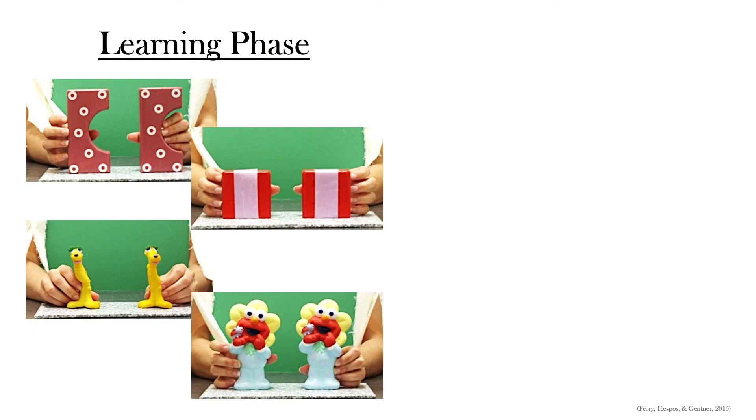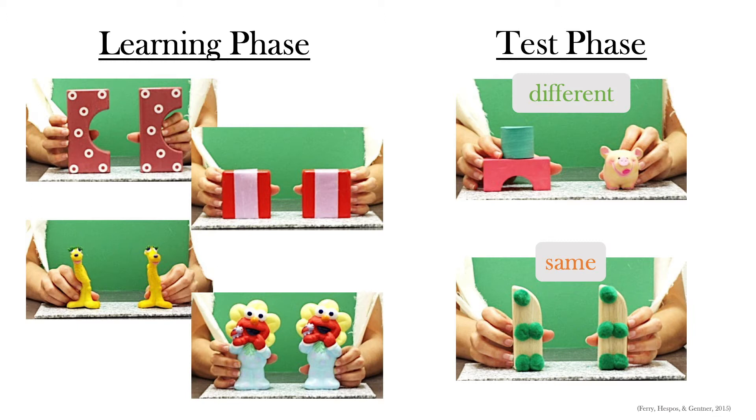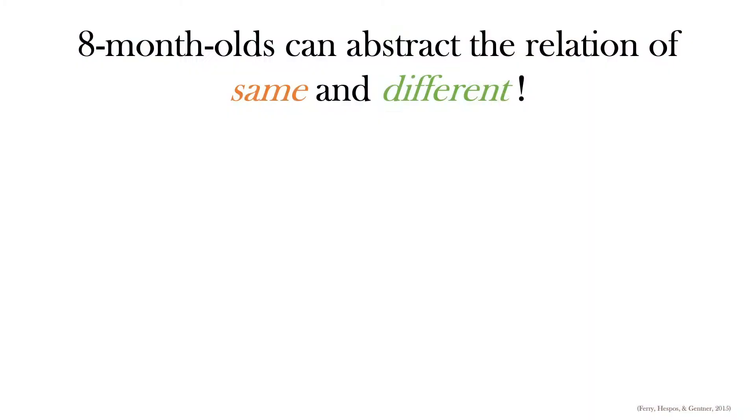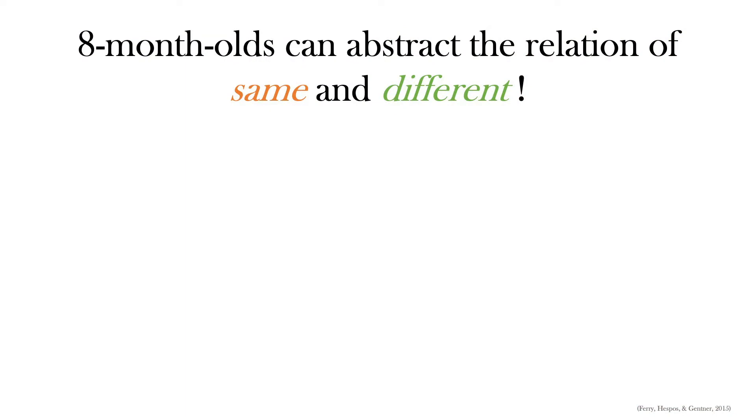So the results of this study show us that if a baby has learned and abstracted this relation of same, and we showed them pairs of objects that are brand new in the test phase, they tend to look much longer at objects that share the relation of different. So, to summarize, eight-month-old babies can abstract the relation of same and different.